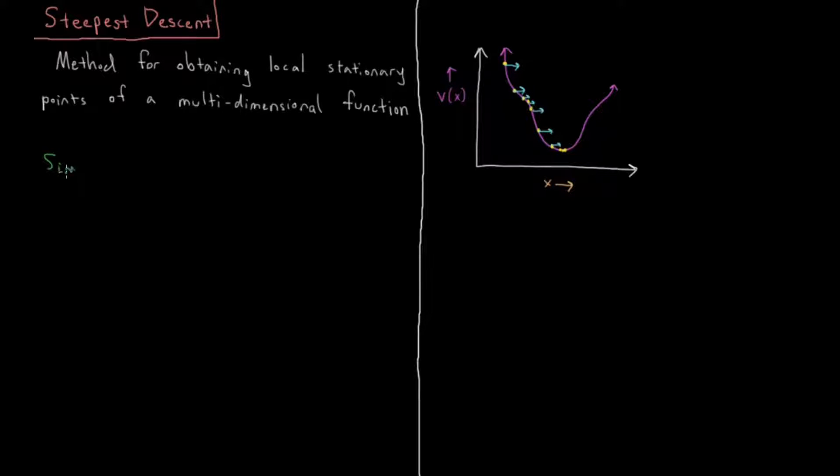So steepest descent, in terms of the hierarchy of all possible methods for finding these local minima, these optimized structures, is a simple method for geometry optimization relative to the standards of all the possibilities that exist.